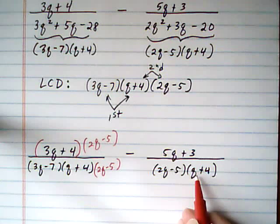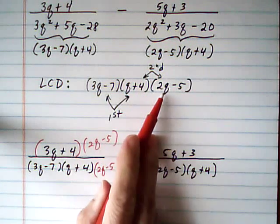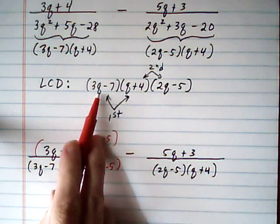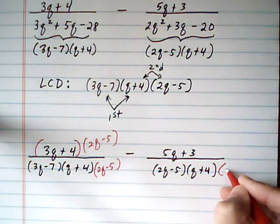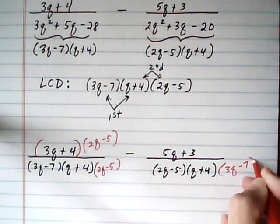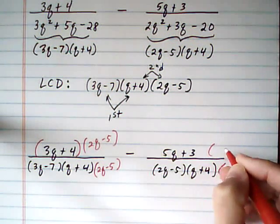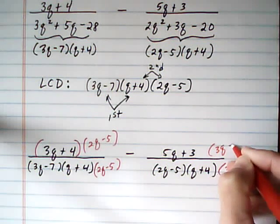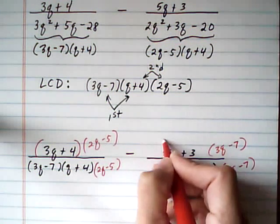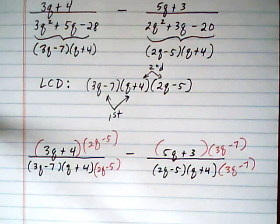This one, we've got 2q minus 5 and q plus 4, so we have the two last factors already. We need 3q minus 7. So we multiply it in the bottom, and that's fine to do as long as you multiply to the top to balance it out. And again, parentheses, because you want to make sure you multiply the entire numerator.